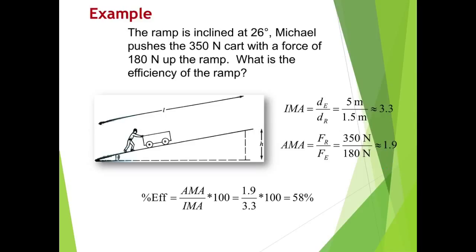So now how efficient though is this system? So percent efficiency is going to be AMA, which is approximately 1.9, divided by IMA, which was approximately 3.3. I multiply that by 100 and I'm going to get 58%. So the efficiency of this ramp is 58%.